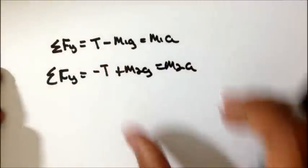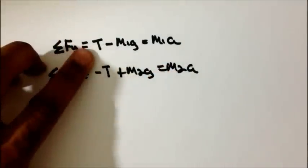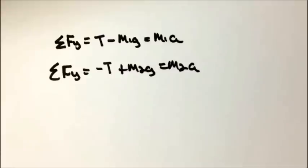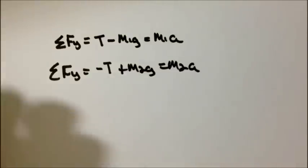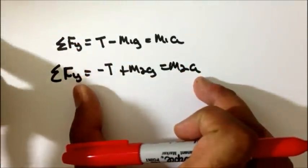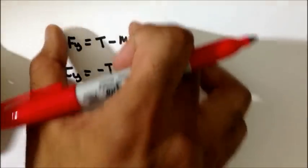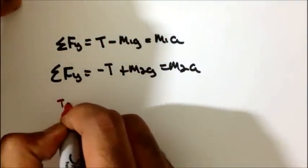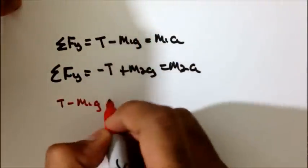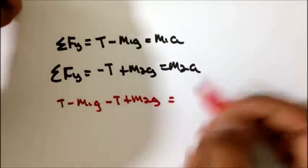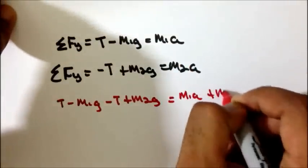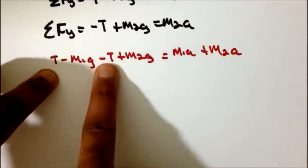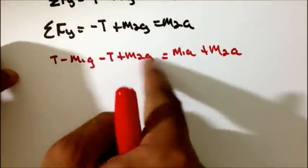We have constructed a system of two equations and two unknowns. Our unknowns are T, the tension, and A, the acceleration. We are interested in solving for A, the acceleration of the system. We will proceed by adding the two equations. On the left side: (T − M1g) + (−T + M2g). Notice that T and −T cancel each other out, leaving −M1g + M2g on the left side.